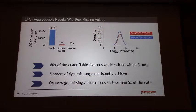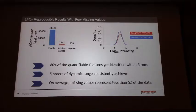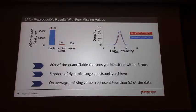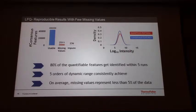People usually complain about data-dependent acquisition having a lot of missing values. My answer to that is that it's not true. We get less than 5% missing values within runs. We get around 45,000 features that we can use, quantify, and identify. As you can see, pretty much 80% of the features that we quantify we can identify with peptides.